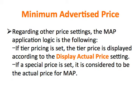Regarding the other price settings, the MAP application logic is the following: if tier pricing is set, the tier price is displayed according to the Display Actual Price setting. If a special price is set, it is considered to be the actual price for MAP. In the order management and customer management tools, as well as in the report sections of the admin panel, only the actual price will appear.